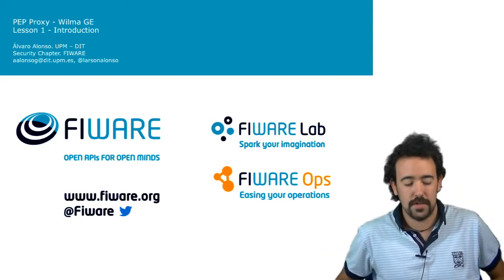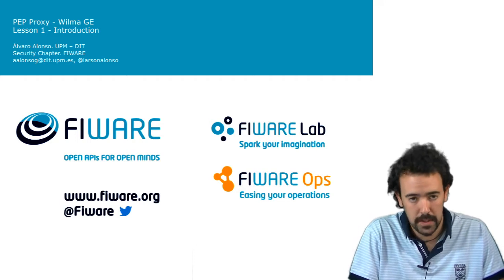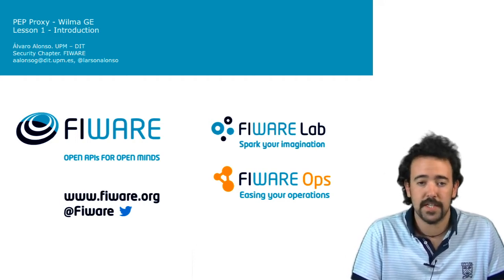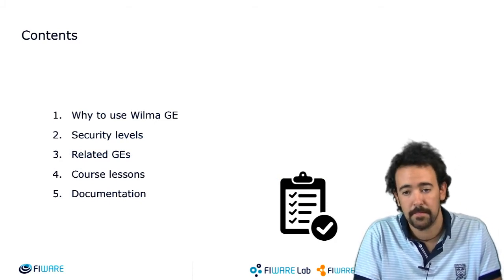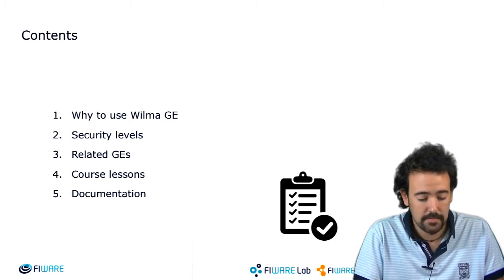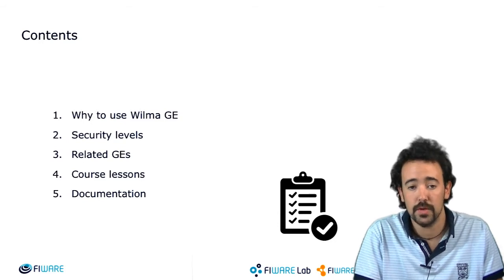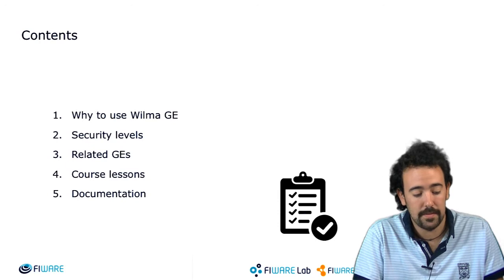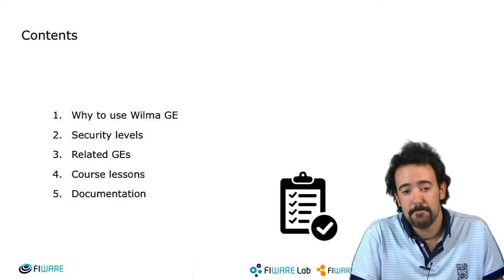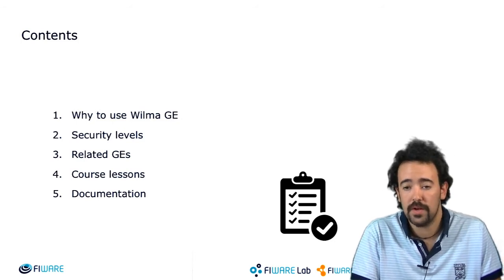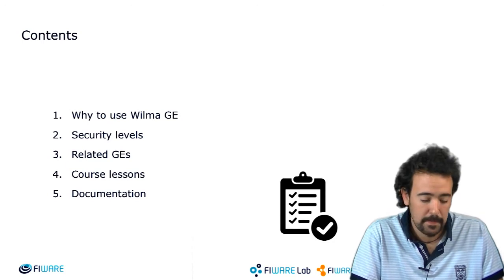Welcome to this FIWARE Academy course in the scope of the FIWARE Security Chapter, regarding the PEP Proxy Wilma Generic Enabler. This is the first lesson of this course, in which I will give you an introduction of why to use this Wilma Generic Enabler. Then I will provide you an idea of which levels of security this component provides, and enumerate the related generic enablers involved in this configuration. Finally, I will summarize how the rest of the lessons of this course will be structured.